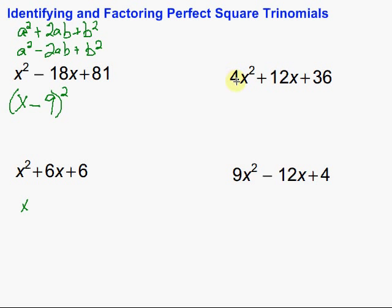Okay, so, let's take a look at this next one. Again, doing the check to see if it's a perfect square trinomial. Is this a perfect square? Well, yes. 2x times 2x would get us 4x squared.